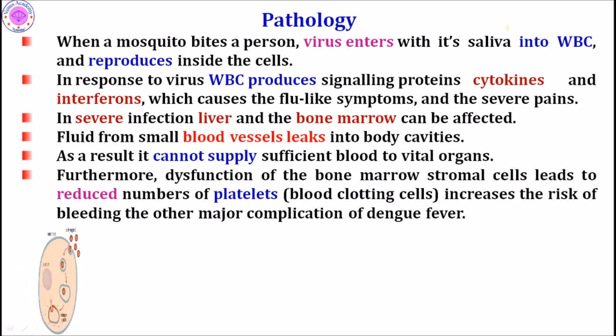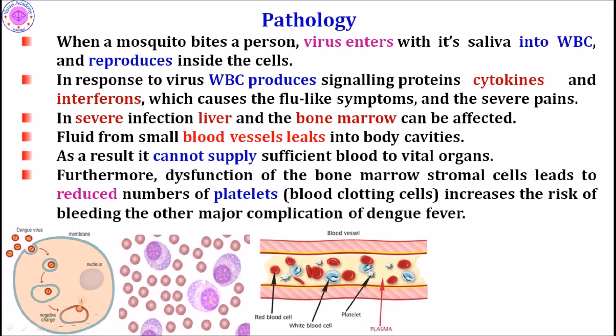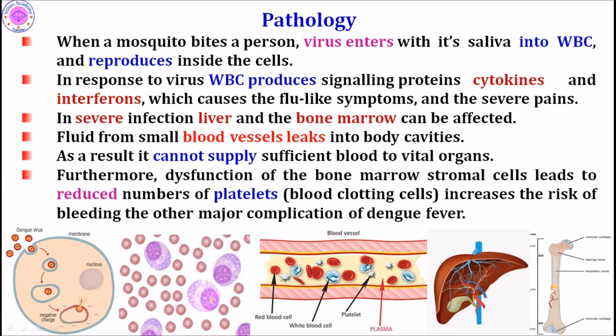When a mosquito bites a person, the virus enters with its saliva into white blood cells (WBCs), where it reproduces and increases in number. In response, WBCs produce cytokines and interferons to fight the virus, and these cause flu-like symptoms — fever and severe pains. In severe infection, bone marrow is affected, and fluid from blood vessels leaks into body cavities, reducing blood supply to vital organs such as the brain and heart, which can lead to coma.